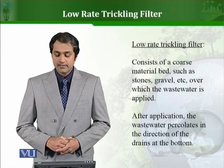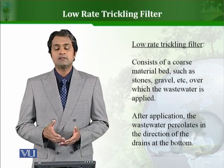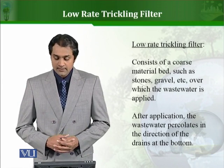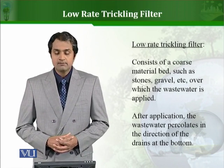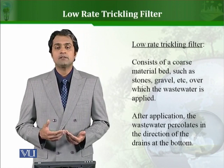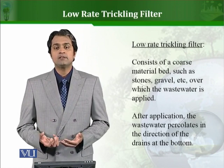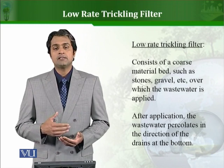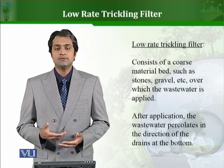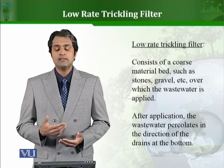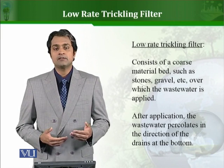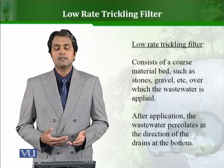Talking about low rate trickling filters — among all aerobic filters, the first type is the low rate trickling filter. It consists of a coarse material bed such as stone, gravel, etc., onto which wastewater is applied. The wastewater contains different microorganisms which grow on the support material in the form of biofilms. The organic content present in the wastewater serves as food for these microorganisms, so they grow and degrade the organic content.